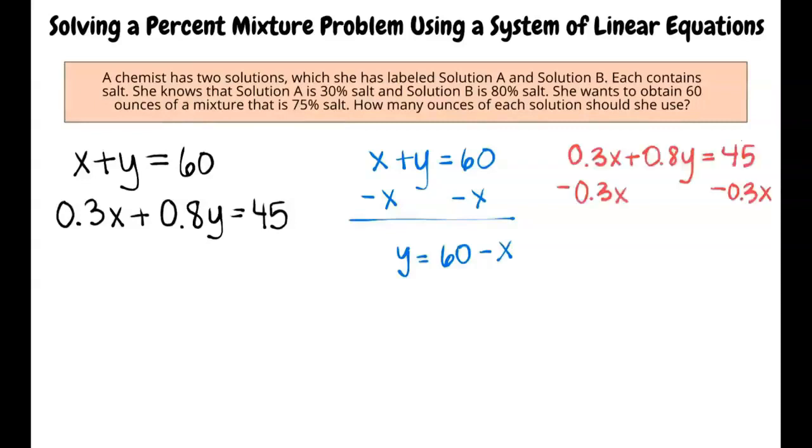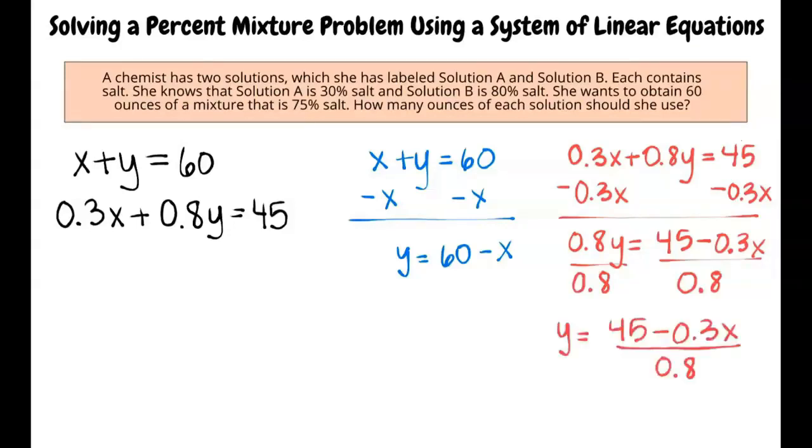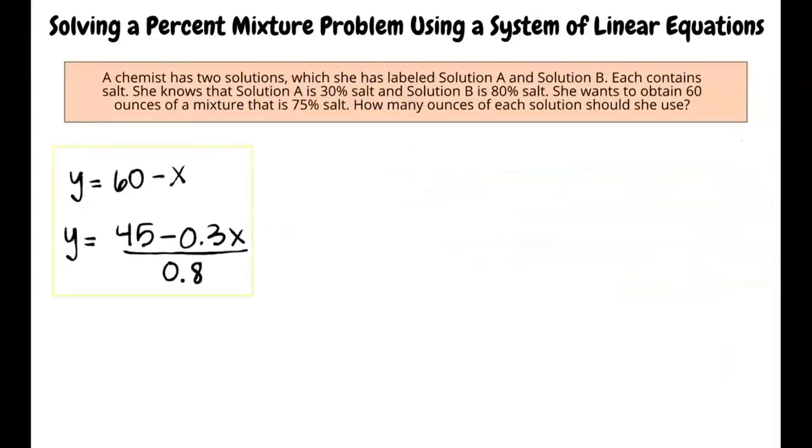For the second equation, subtract 0.3x from both sides of the equation and write 0.8y equals 45 minus 0.3x, all divided by 0.8. Now that we have solved both equations for y, we can go to the Alex graphing calculator.